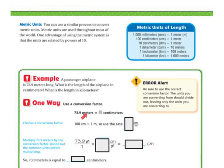So one way is to use a conversion factor. So we have 73.9 meters, and we're doing centimeters. Well, 100 centimeters equals 1 meter. We saw that in our chart up here. So we're going to use the rate of 100 over 1.